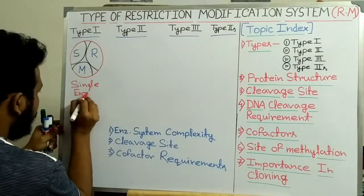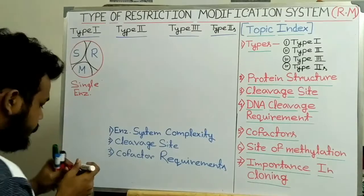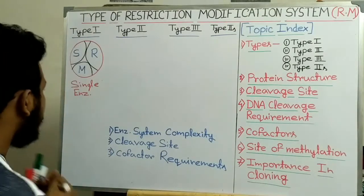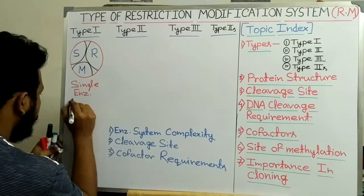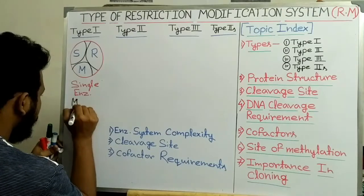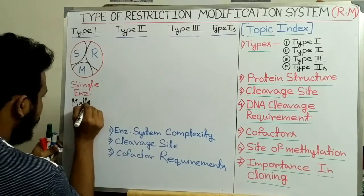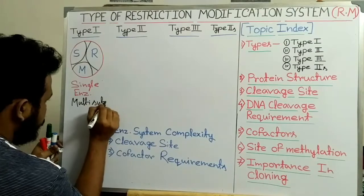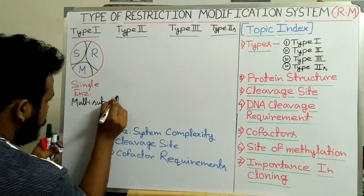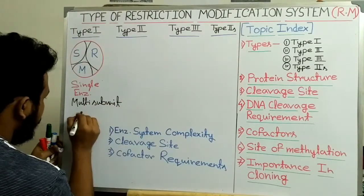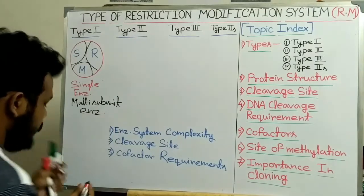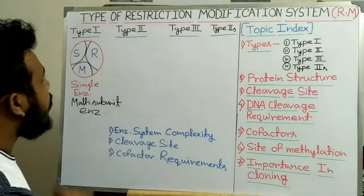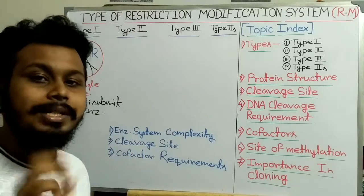So Type 1 restriction enzymes are a single enzyme but they are multi-subunit enzymes.